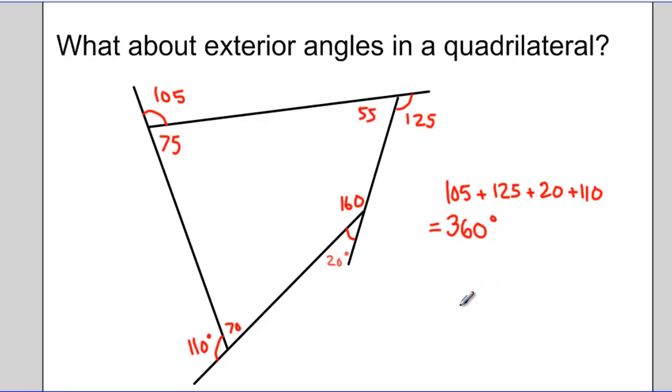And so previously, the exterior angles in a triangle all add up to 360 degrees. The exterior angles in our quadrilateral look like they add up to 360 degrees. I think it's a safe assumption to make that the exterior angles in any quadrilateral add up to 360 degrees.